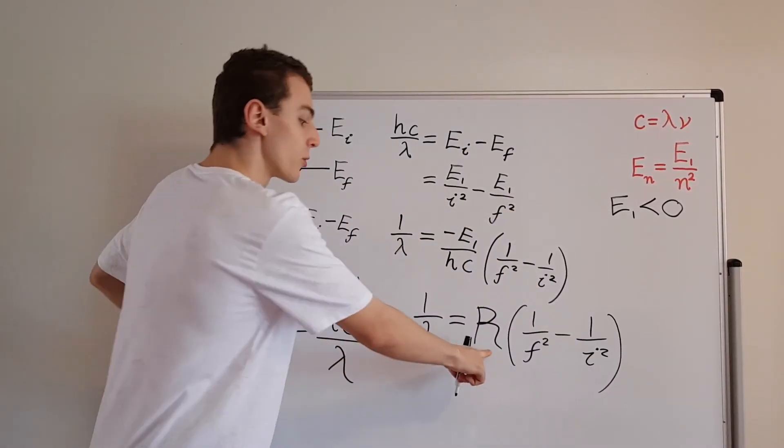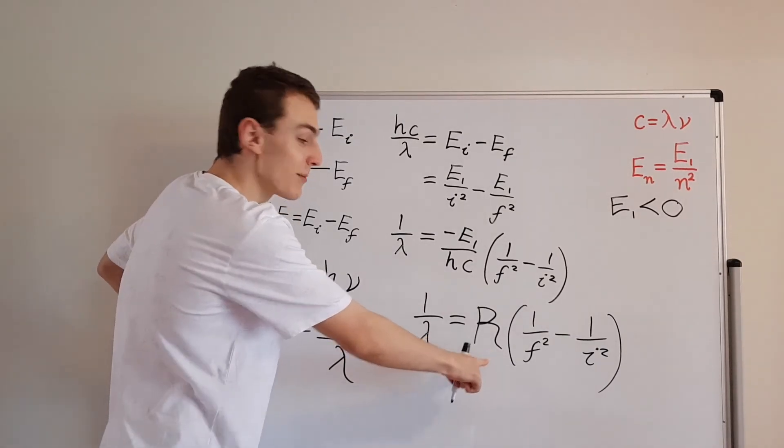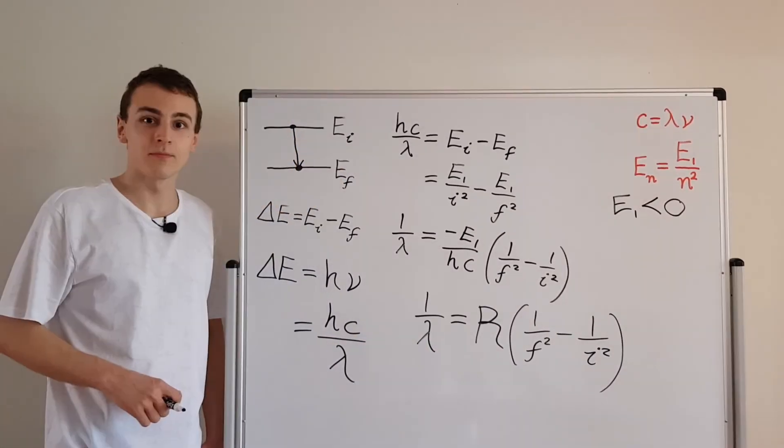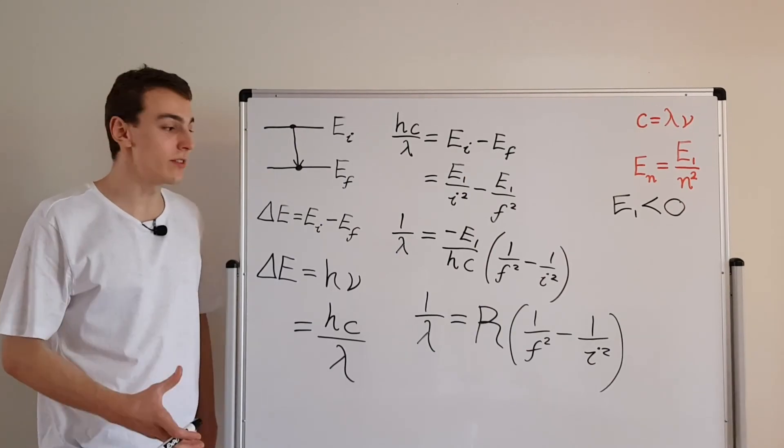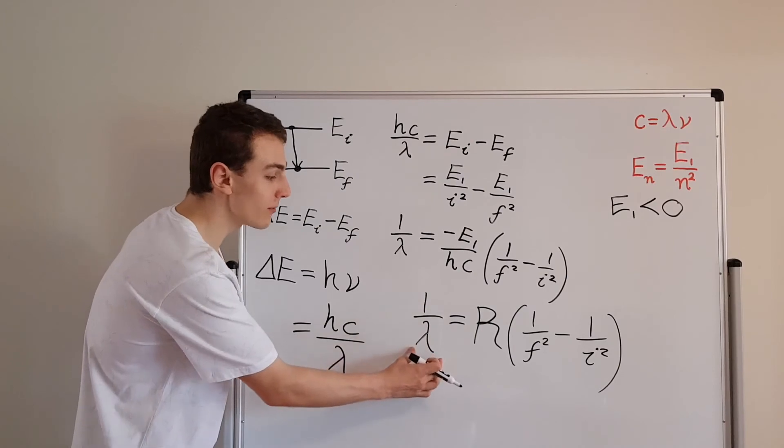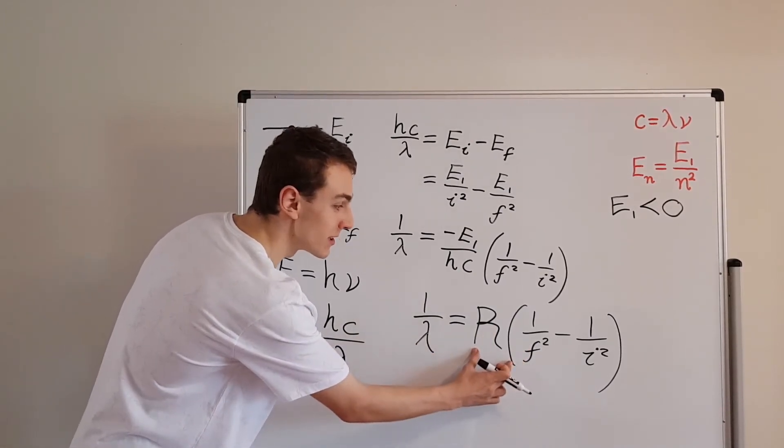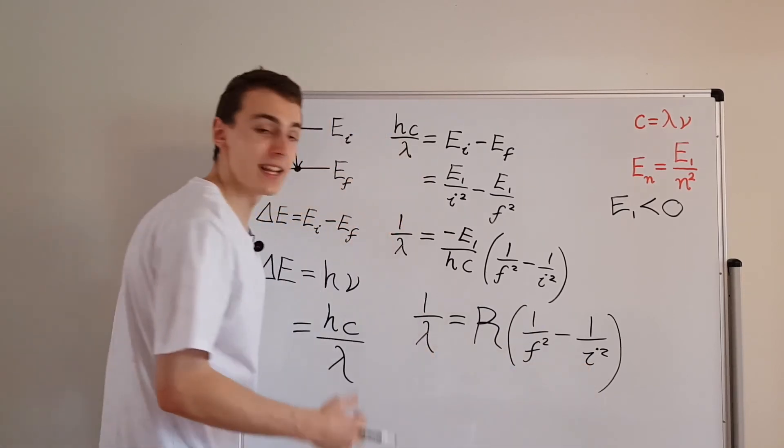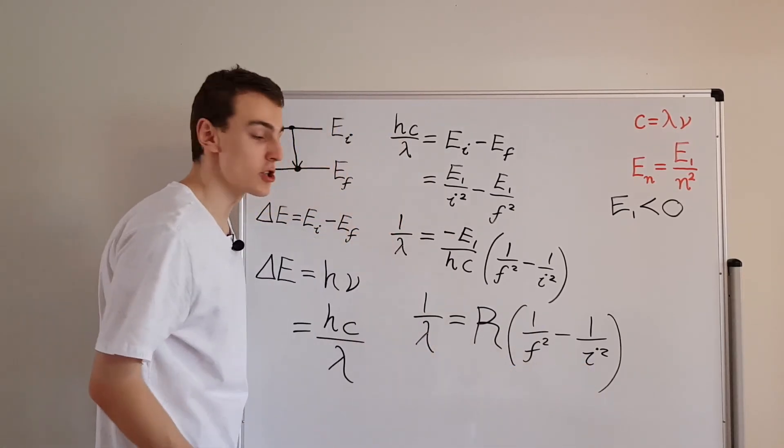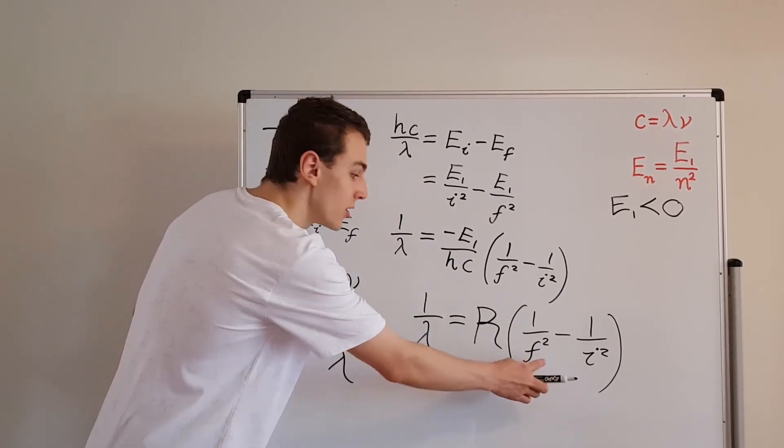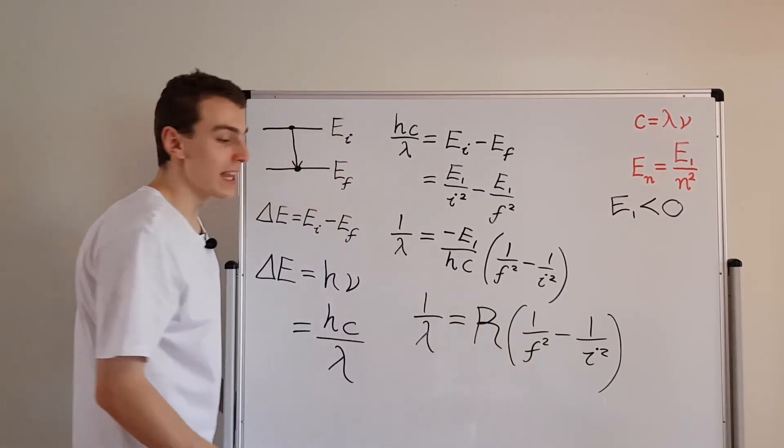And this guy is called the Rydberg constant. It's the same guy that actually developed this formula, the Rydberg formula. The takeaway message for this video is the Rydberg formula: 1 over the wavelength is the Rydberg constant times this mess over here. This i, that's an integer. And this f, that's an integer. This guy denotes the initial energy level, and this guy denotes the final energy level.